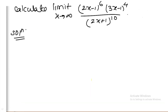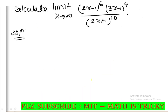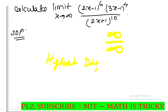The next question is in the infinity by infinity form. We use the rule: take the highest degree variable and divide — highest degree variable in numerator divided by highest degree variable in denominator.